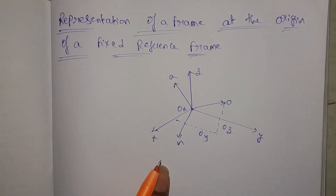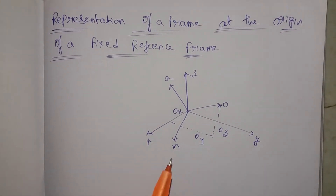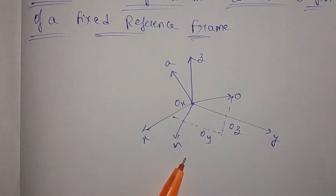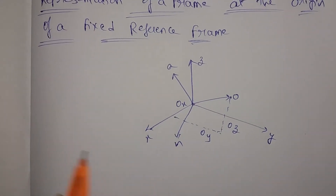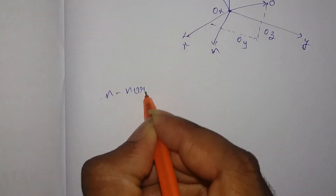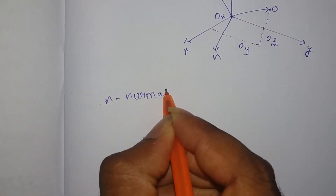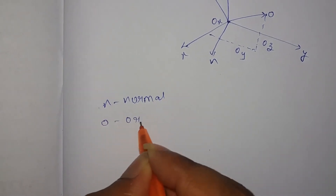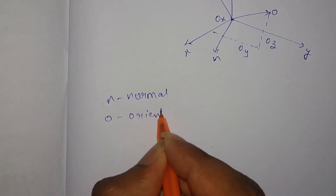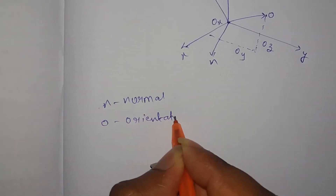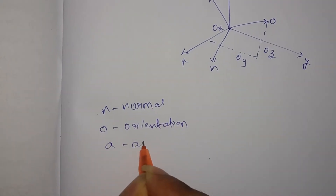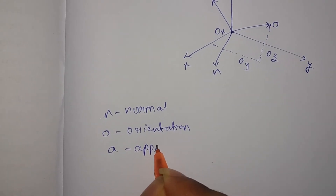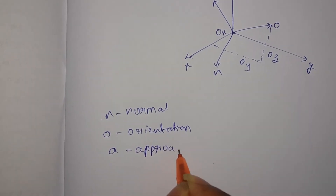We use the N, O, A frames. N is Normal, O is Orientation, and A is Approach.